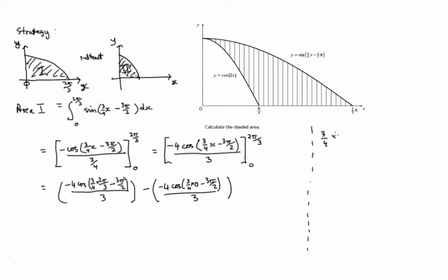So the first one, 3/4 times 2π/3. Divide top by 3 and bottom by 3, top by 2, bottom by 2, and we get π/2. So it's negative 4 times cosine of π/2 minus 3π/2. If we have 1 lot of π/2 minus 3 lots of π/2, we get minus 2 lots of π/2, which is minus π. So we get cosine of negative π over 3. Take away a negative, we get plus 4 cosine of 3/4 times 0 minus 3π/2, which is cosine of minus 3π/2, all over 3.